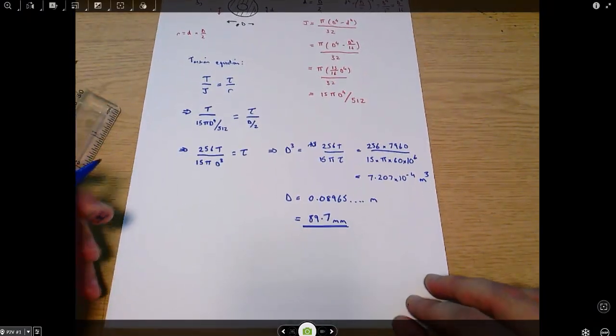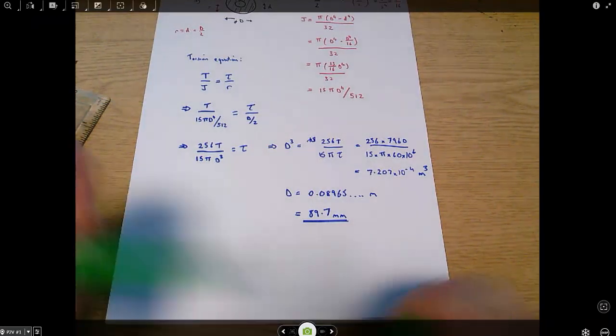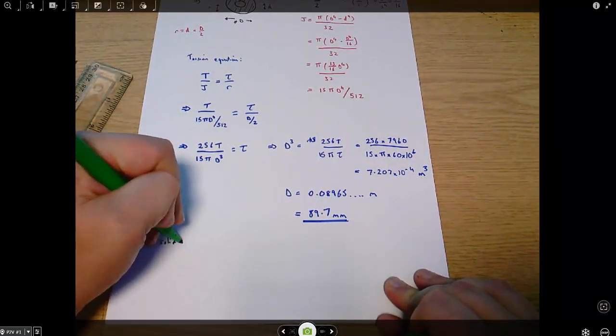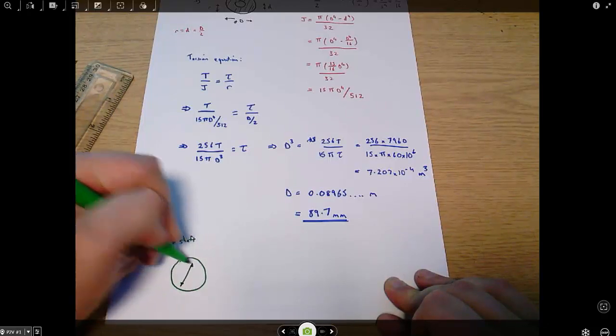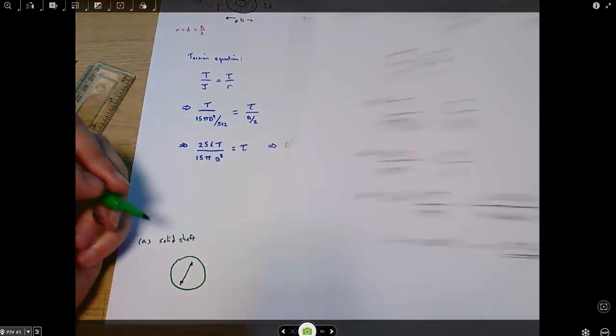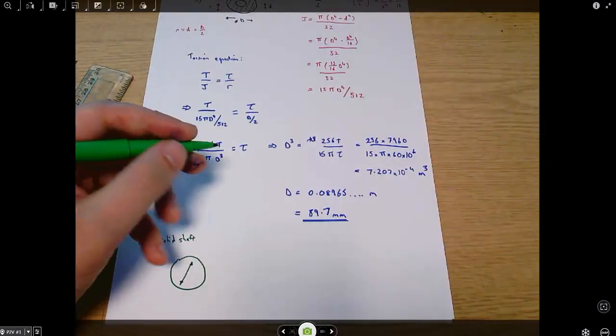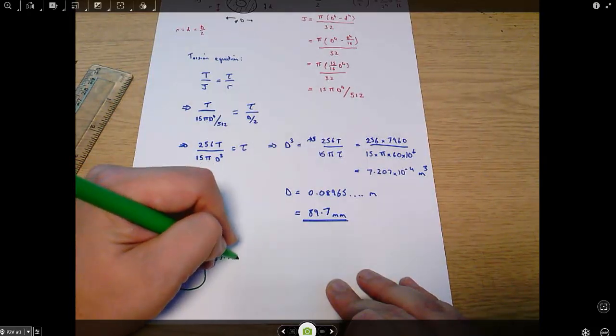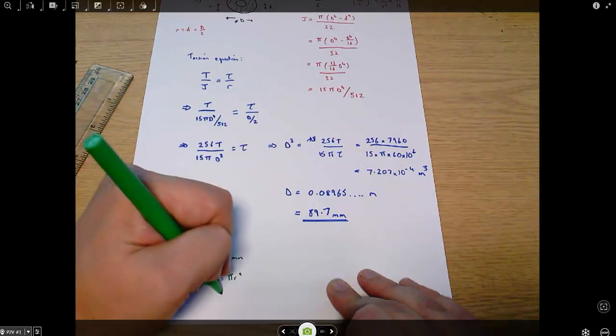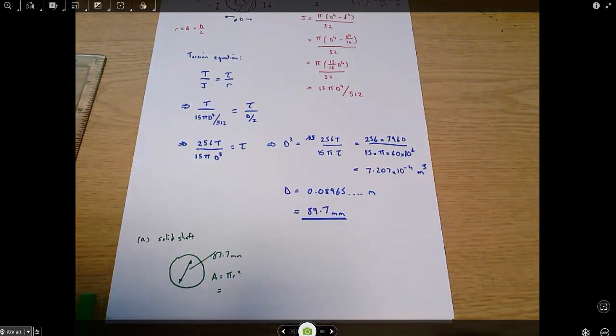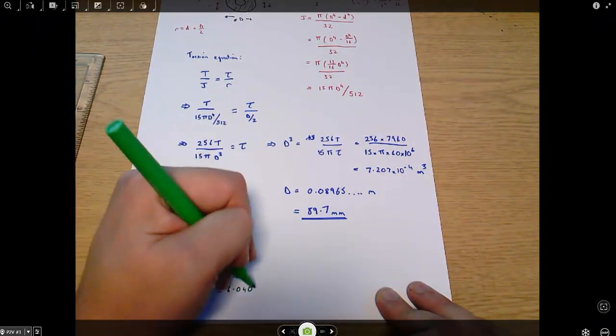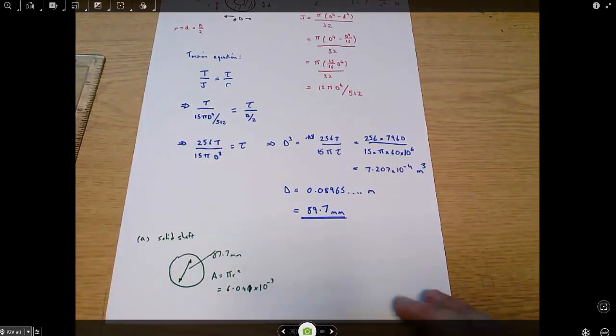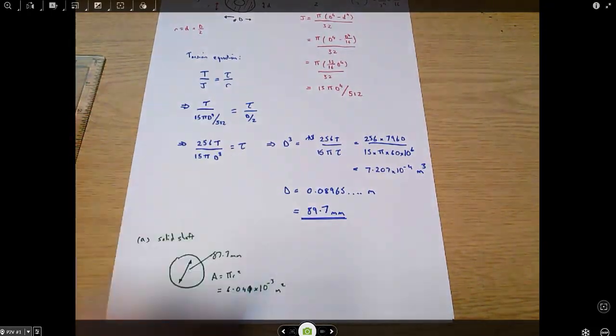So we've got - just to look at where we've got to. In part A, with a solid shaft, we had a diameter of 87.7 millimetres. So the area is pi r squared, which equals 6.041 times 10 to the minus 3 square metres.